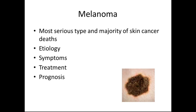Melanoma is the most serious and most deadly of all skin cancers. The etiology is uncontrolled growth of melanocytes, said to be genetic with environmental factors — primarily sun exposure. Symptoms include a tumor that can be tan, brown, or black; it arises in a mole and changes the size and color of the mole. It metastasizes quickly and spreads to the lymph nodes. Treatment is surgical excision, radiation, and chemotherapy. Prognosis depends on the degree of spread, but 20% of people with melanoma die.